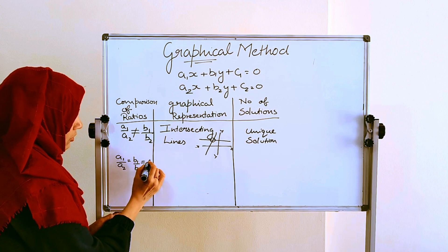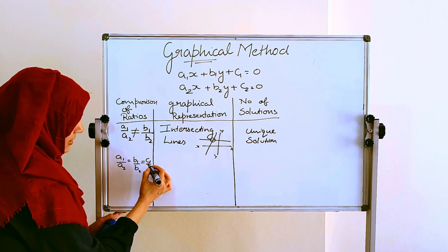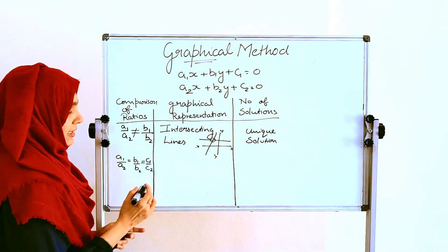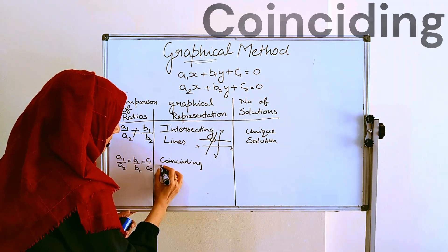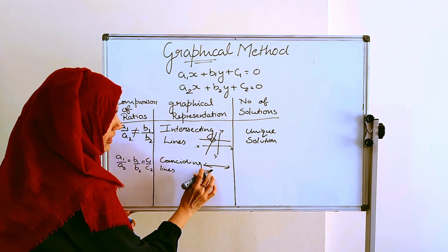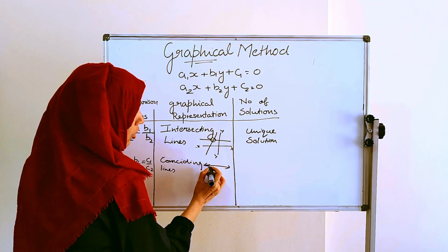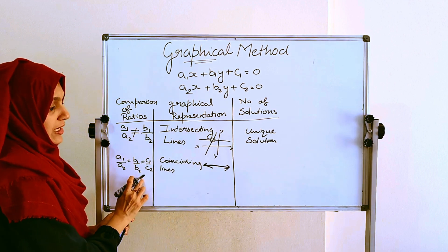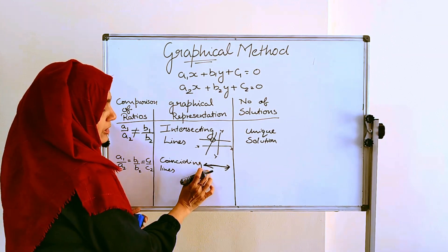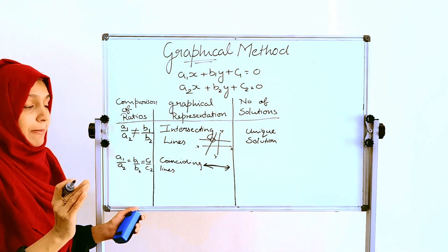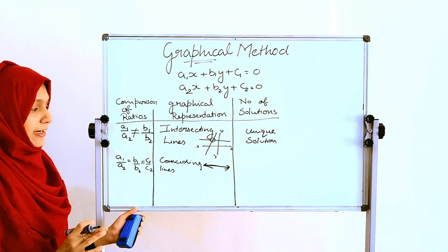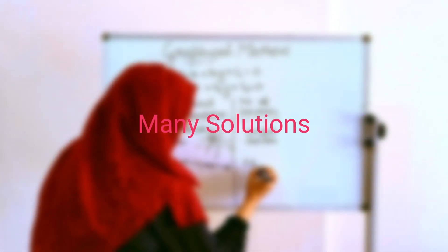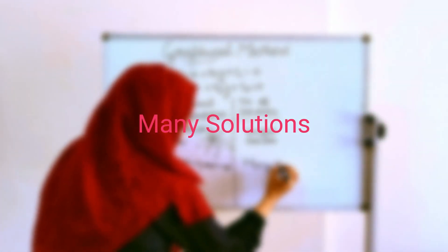The second case is when a1 by a2 equals b1 by b2 equals c1 by c2 — all ratios are equal. In this case, one equation's line overlaps the other; they are coinciding lines. In that case, we will get many solutions.